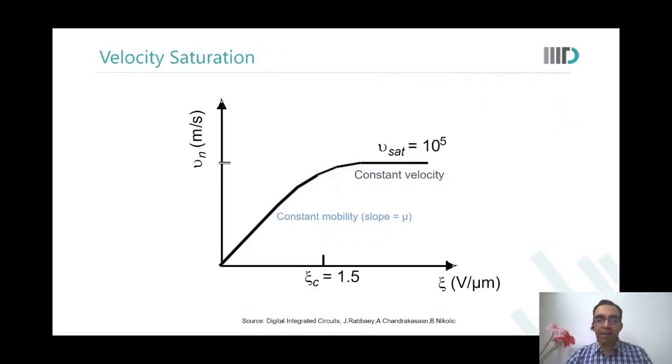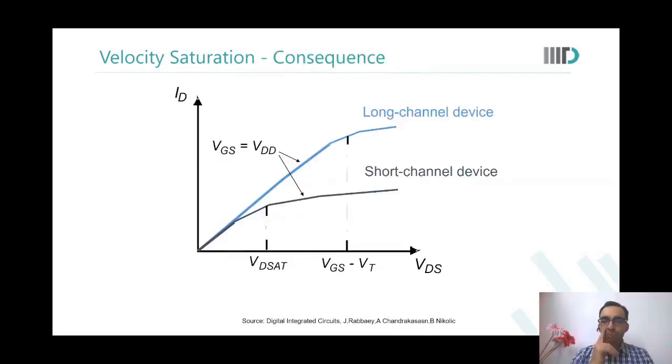And how does that affect us? It affects us because if we have a long channel device, then we observe there is an increase in current until VGS minus VT, the entire gate overdrive region. Whereas in very small devices, we observe that the saturation starts to happen earlier. This is because of velocity saturation.